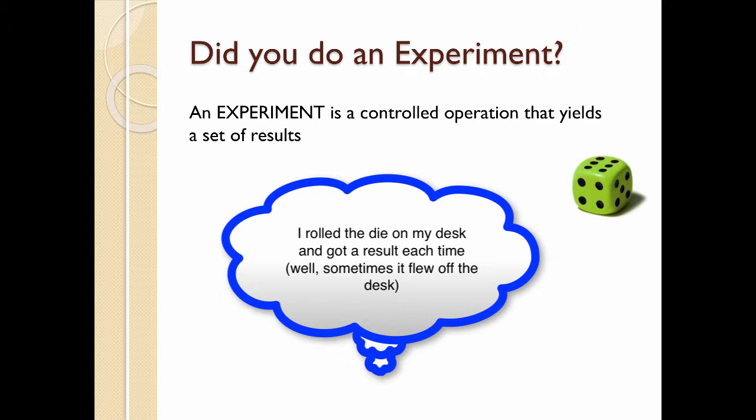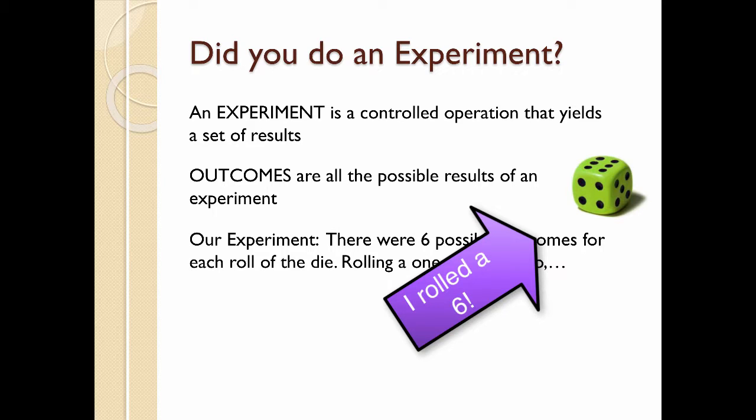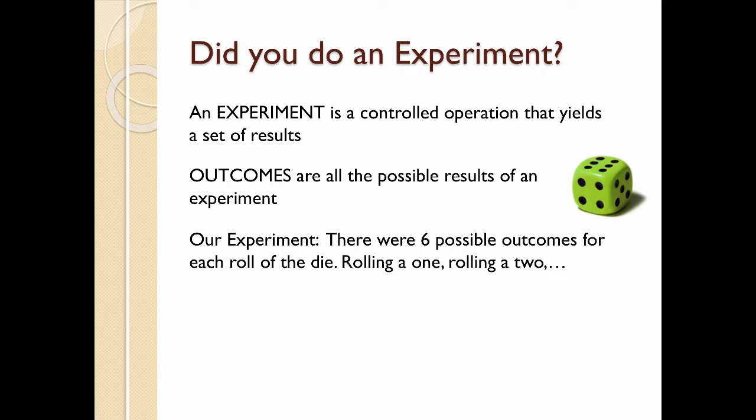So each time you rolled, one of the numbers was sitting on top of the die. An outcome is a possible result of the experiment. So you could roll a 6, and that would be one of the outcomes. So in our experiment, there were six possible outcomes for each roll of the die. You could roll a 1, you could roll a 2, etc., all up to 6. And I'm assuming that you just have a normal, traditional die. If you have some other kind of a die, then your outcomes will be a little bit different.